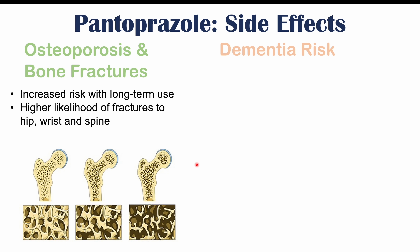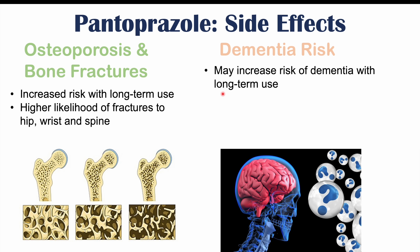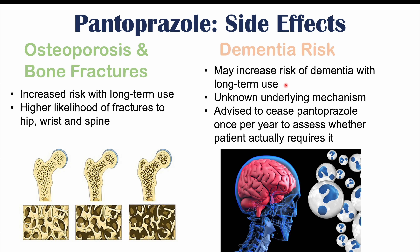Another important associated finding with very long-term pantoprazole use is an increased dementia risk. The connection is not entirely understood, but there is some association between very long-term use and a higher risk for dementia. Because of all of these effects — including increased dementia risk — it can be advised to cease or stop taking a proton pump inhibitor like pantoprazole at least once per year to assess whether the patient actually requires it. If acid reflux returns after stopping, the patient can be put back on it; if it doesn't, they may not need it, particularly if they've made lifestyle changes.